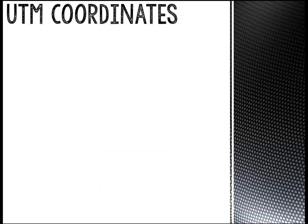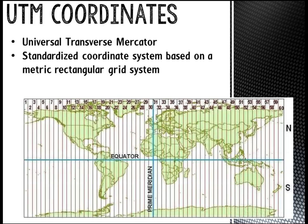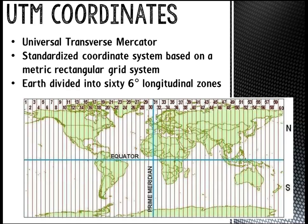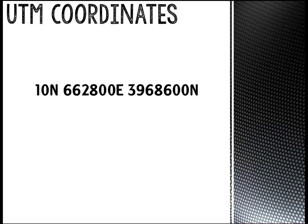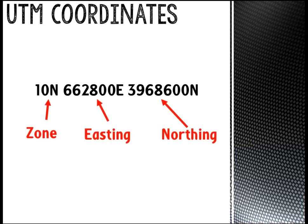Then there are some less familiar coordinate systems, one of which is UTMs. UTM stands for Universal Transverse Mercator, and it is a coordinate system that uses an imaginary rectangular grid placed on the surface of the Earth, divided into 60 6-degree longitudinal zones. UTM coordinates will look like this, with a zone either before or after the other numbers, which are an easting, indicated by an E, and a northing, indicated by an N. Sometimes the zone has an N or an S after it, but not always.